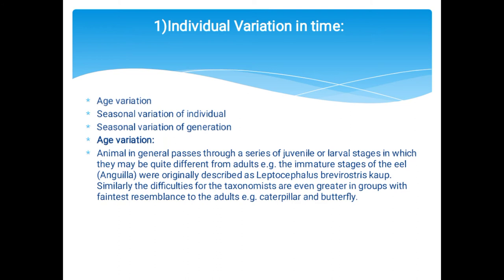Individual variation in time includes age variation, which includes seasonal variation of an individual as well as seasonal variation of a generation. Animals in general pass through a series of juvenile or larval stages in which they may be quite different from adults. For example, immature stages of the eel Anguilla were originally described as Leptocephalus brevirostris — that was their larval form.